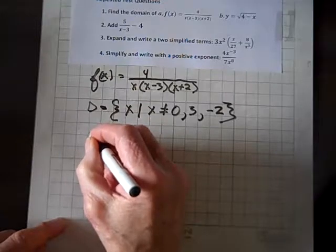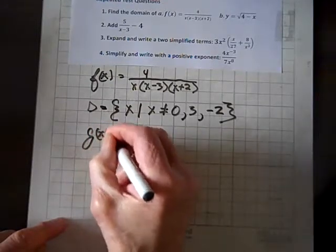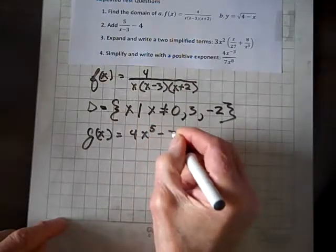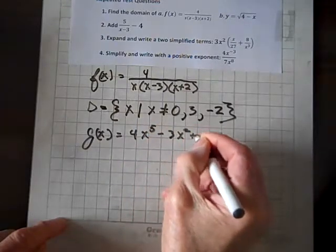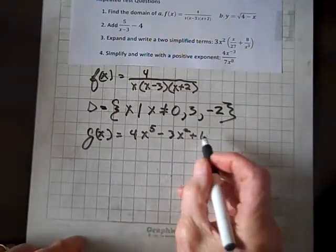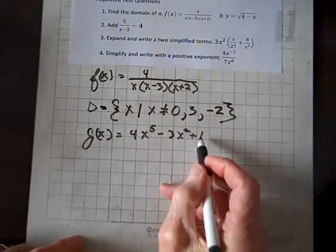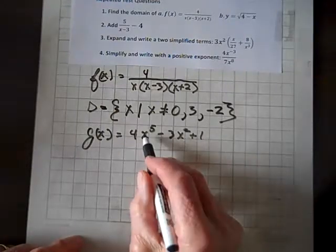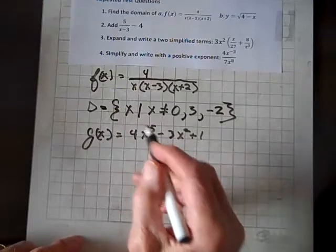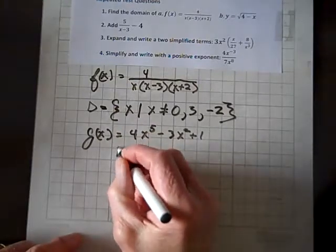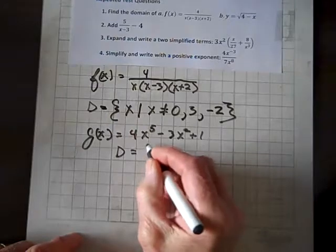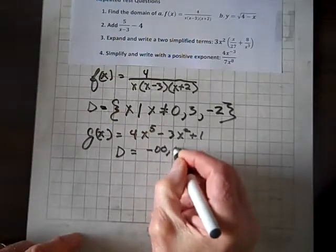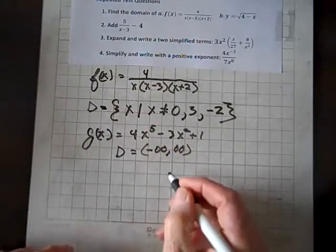By the way, let me clear something up. What if we have g(x) equals 4x^5 minus 3x^2 plus 1? What's the domain for this? Well, there's no possibility of division by zero. As a matter of fact, there's no variables that are under a square root symbol, so the domain is all reals, or we can go negative infinity to infinity using interval notation.